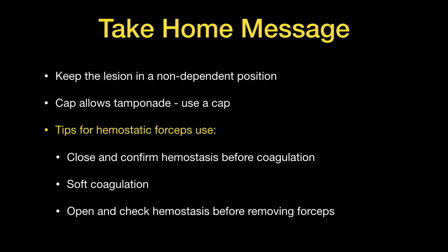When it comes to using a hemostatic forceps, the steps include: find the bleeding spot, open the jaws, close the jaws onto the bleeding spot, confirm tamponade and hemostasis, and before you apply soft coagulation, tent the vessel a little bit away from the submucosa. The coagulation setting is typically soft coagulation effect 4, anywhere between 60 to 80, or in some cases 100 watts. After you apply soft coagulation, reopen the forceps — do not remove the forceps, stay there — and check for cessation of bleeding before you remove the forceps.